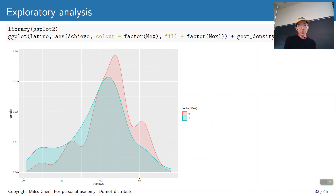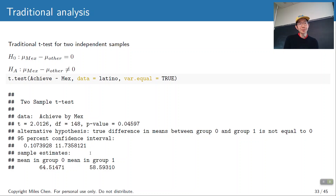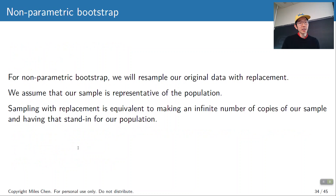Here are density plots showing slightly shifted locations in the means with different peaks. Technically, our samples are big enough — 116 for one group, 34 for another — to apply the central limit theorem, so we could do a classical two-sample t-test. That gives a p-value just under 5%, 0.04597. This would indicate some evidence that this difference can't be explained by randomness alone. But let's try doing a non-parametric bootstrap.